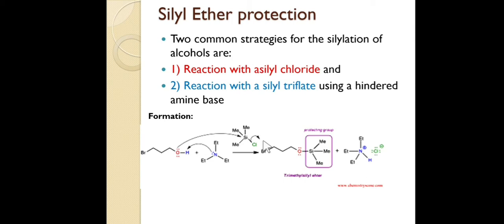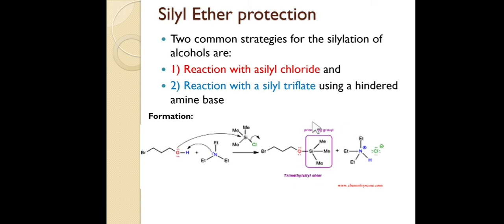Here is the mechanism for the formation: we have trimethylsilyl chloride and an alcohol in the presence of a hindered base like triethylamine. The oxygen lone pair attacks on silicon, and chlorine leaves as the leaving group. This protonated compound is then treated with triethylamine, which abstracts the proton from the oxygen, and we get the trimethylsilyl ether — a protecting group for the alcohol. This is a very simple mechanism for the protection of alcohols using silyl chloride.